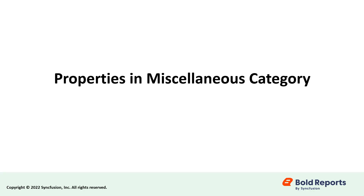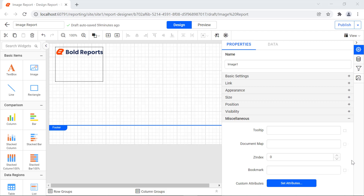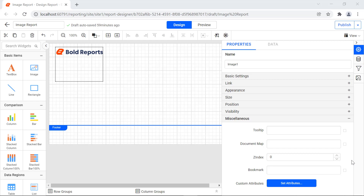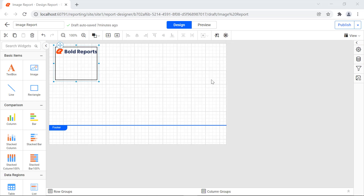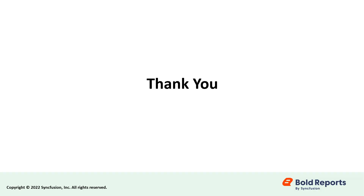Let's see the properties under the miscellaneous category. The Z-index property refers to the stacking order of items, with rendering order from the lowest to the highest. I hope you learned some basic and necessary steps to work with the image report item. We'll see more techniques and report designs in the future. Stay tuned to this channel for our upcoming videos on Bold Reports. Don't forget to click the like button and subscribe to our channel. Thanks for watching, and we'll see you next time.